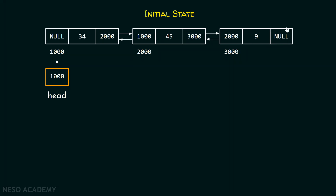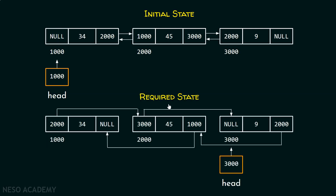First, we will update the next part of this node so that it can point to this node, and the prev part must contain null because this is the first node of the list. So prev part must hold null, and next part must hold this address 2000. We must also update the next and prev parts of the middle node, and finally update the next part of the last node to contain null and its prev part to contain address 2000. This is the required state we want.